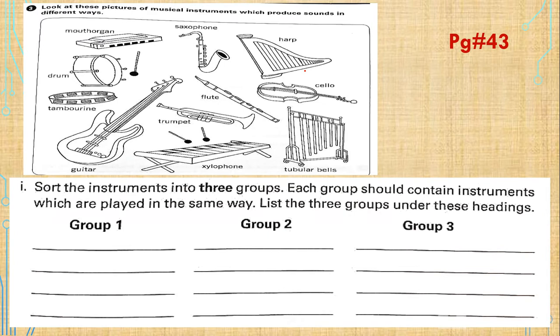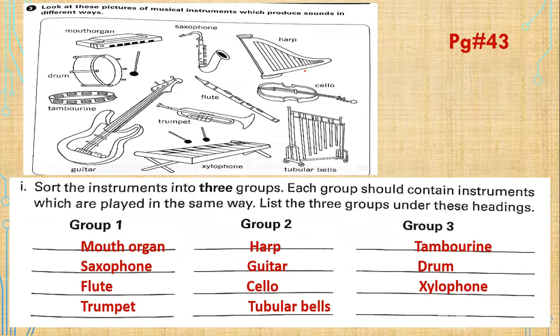Look at these pictures of musical instruments which produce sounds in different ways. The question is: assort the instruments in three groups. Each group should contain instruments which are played in the same way. So in the first group, we will put mouth organ, saxophone, flute and trumpet. All these instruments are used where you can blow into it.